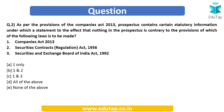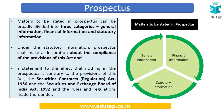Next question: as per the provisions of the Companies Act 2013, a prospectus contains certain statutory information, and under this information a statement is required to be made to the effect that nothing in this prospectus is contrary to the provisions of which of the following laws? Options are: (a) Companies Act 2013, (b) Securities Contract Regulation Act 1956, (c) Securities and Exchange Board of India Act 1992. What are the laws covered in this required statement?